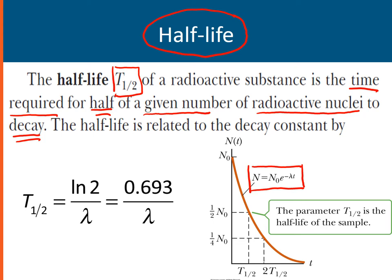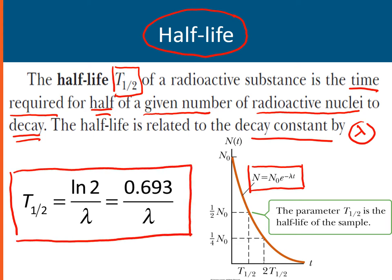The half-life is related to the decay constant lambda by the equation: half-life equals ln 2 divided by the decay constant, and ln 2 is approximately equal to 0.693. So we have half-life equals 0.693 divided by the decay constant, and the unit of half-life is seconds.